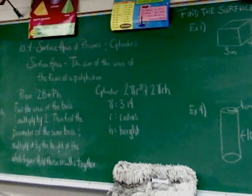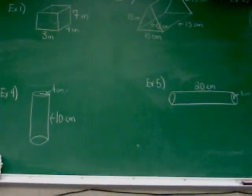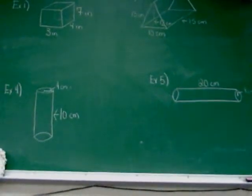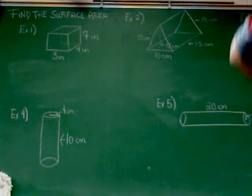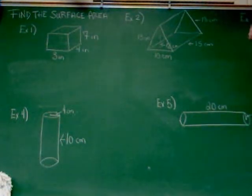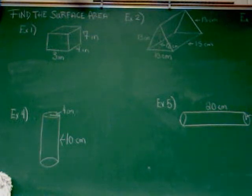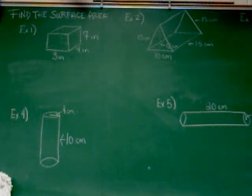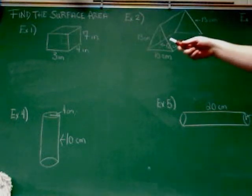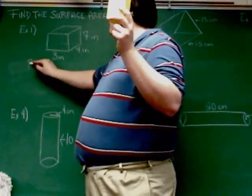Let's go ahead into the examples. Across the top of the board are all prism examples; across the bottom are all cylinder examples. We'll start with example one, finding the surface area of that prism. The prism is laying down like this. There are three components to the formula for surface area of a prism. First thing you have to find is the area of the base.